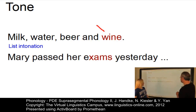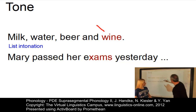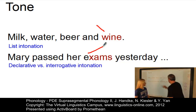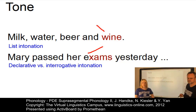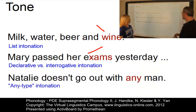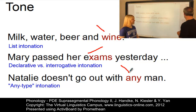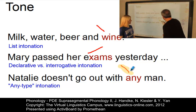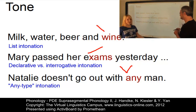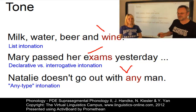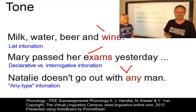Another example: 'Mary passed her exams yesterday' with a falling tone is clearly a declarative sentence. But 'Mary passed her exams yesterday?' with a rising tone becomes an interrogative — a question — in present-day English. And finally: 'Natalie doesn't go out with any man' with a falling tone means she doesn't go out with men at all. But if we use a fall-rise — 'Natalie doesn't go out with any man' — it means she only goes out with particular men. These examples illustrate that tonal phenomena do play a role in English, though only in rare cases in a systematic and phonologically well-definable way.